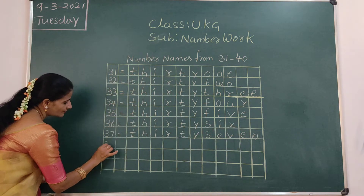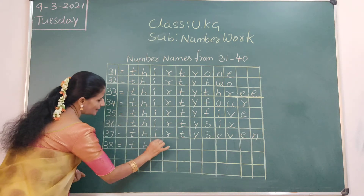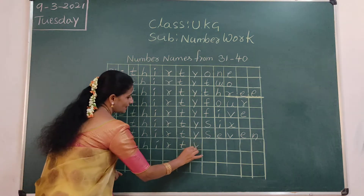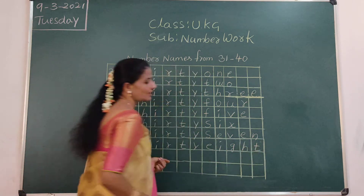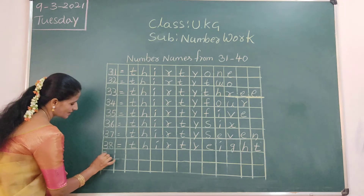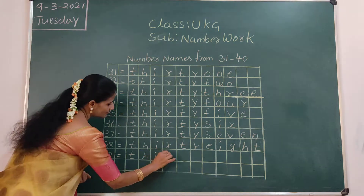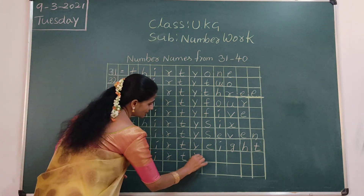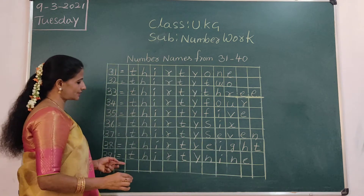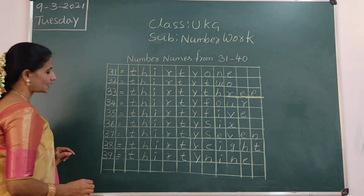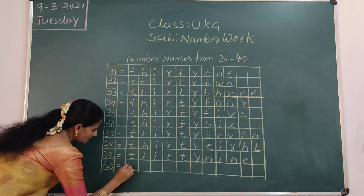Ok children? 38 — THIRTY-EIGHT. T-H, I-R, T-Y, E-I-G-H-T. 38. Now 39 — THIRTY-NINE. 39 after 40. Now 40 — FORTY. F-O-U-R-T-Y. 40.